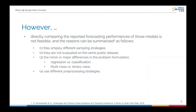Before going into imaging algorithms, I want to discuss one issue first. Although there are various methods proposed, comparing the reported forecasting performances of these models is not feasible. The reasons can be summarized as follows. First, these studies employ different sampling strategies. Second, they are not evaluated on the same public dataset. Third, there exist minor or major differences in the problem formulation — for example, some studies work on regression tasks while others focus on classification issues. Even for the classification issue, it can be divided into multiple or binary classification problems.